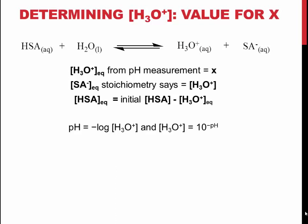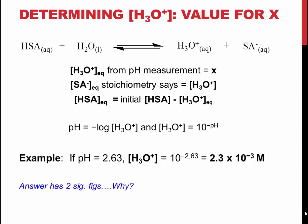This also gives you the concentration of SA minus, and it is equal to the concentration of H3O+. The concentration of HSA can easily be found by subtracting the concentration of H3O+ from the initial HSA concentration.